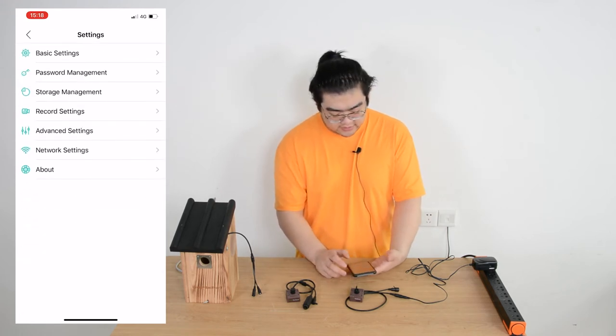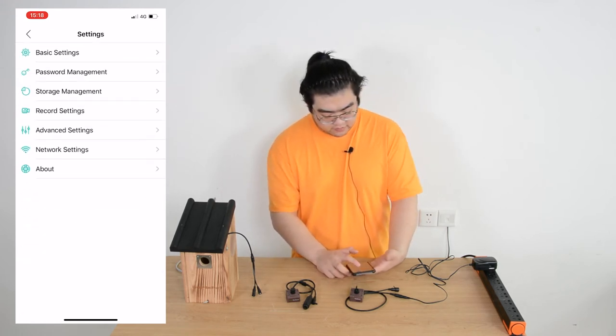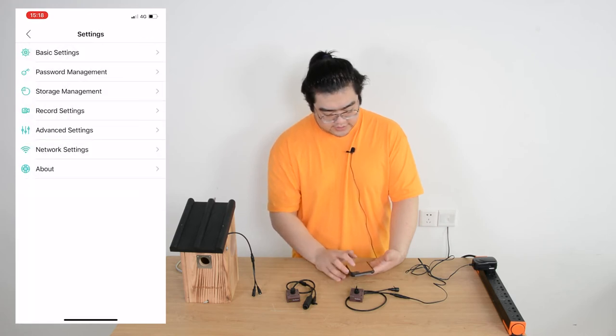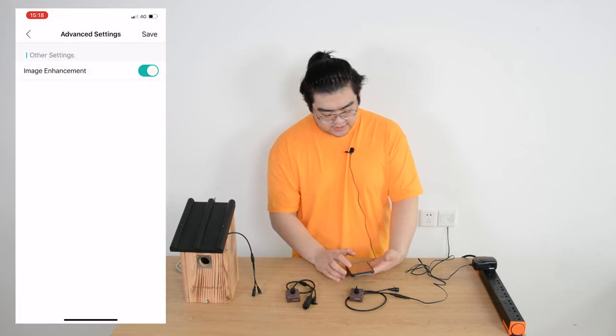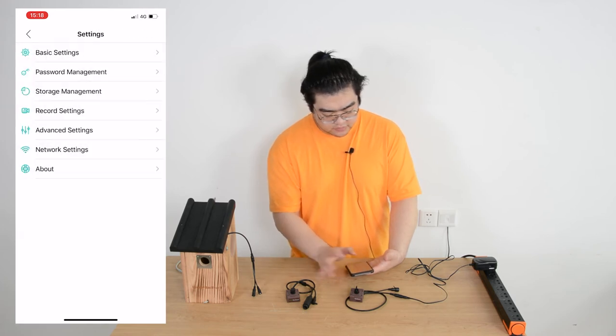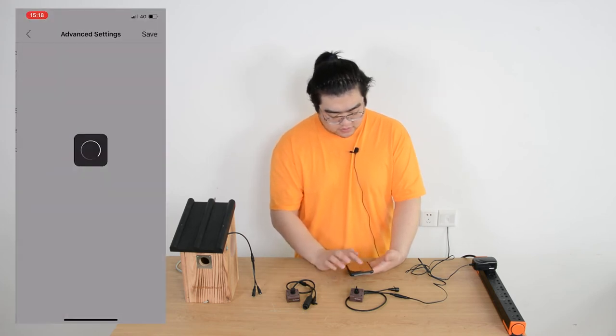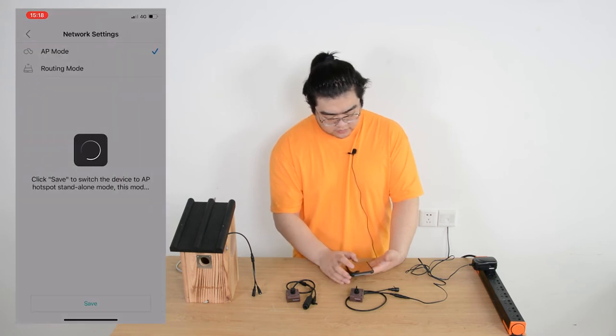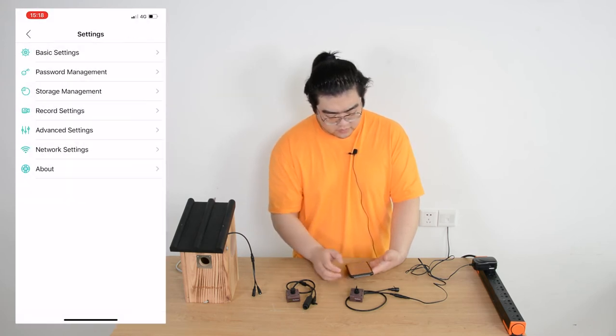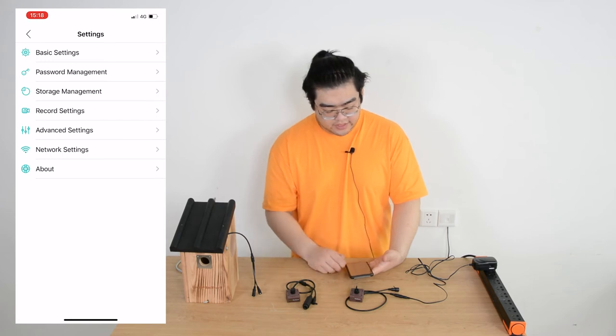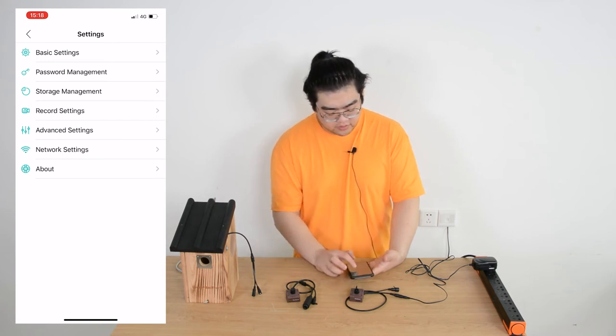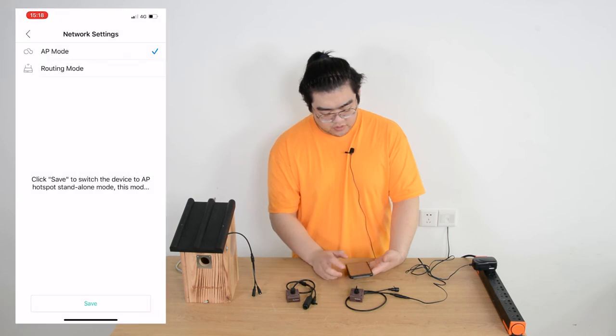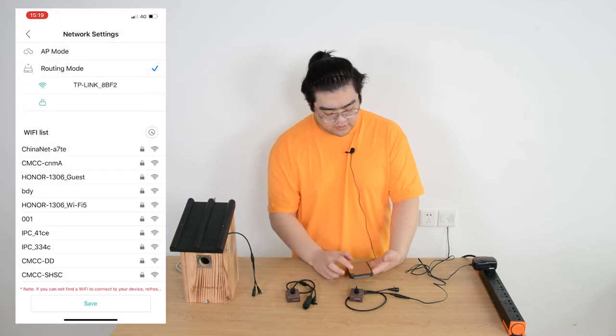All we need to do is go to settings right here and go to settings right here. There is advanced settings. Now we go to settings right here and then we go to the network settings. And then there is this access point mode. Then we choose router mode and then we just feed.